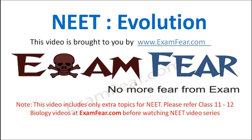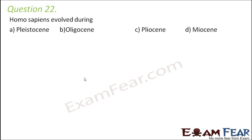This video on NEET evolution is brought to you by examfear.com. Question number 22: Homo sapiens evolved during Pleistocene, Oligocene, Pliocene, or Miocene?